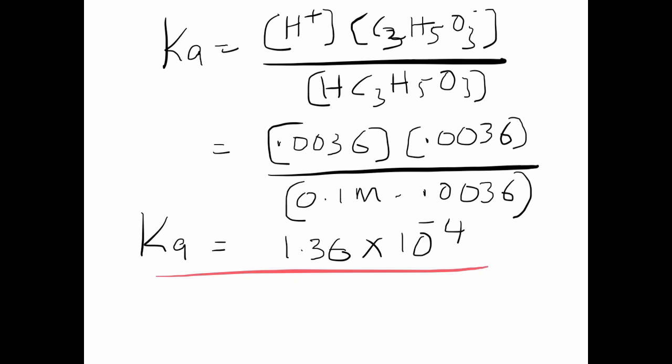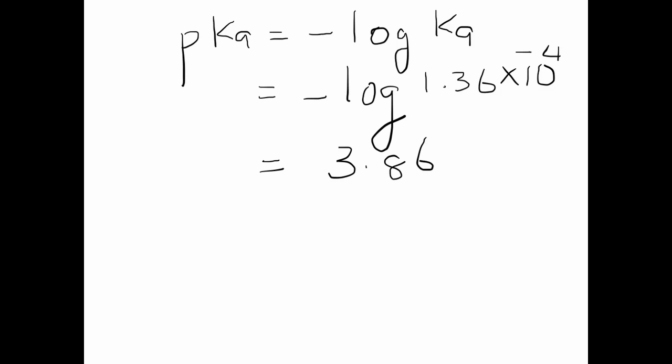Once you get your Ka you can calculate your pKa. pKa equals negative log Ka, equals negative log 1.36 times 10 to the negative 4, pKa equals 3.85. And so now you have converted the Ka to pKa and you have both values, both Ka and pKa for lactic acid.